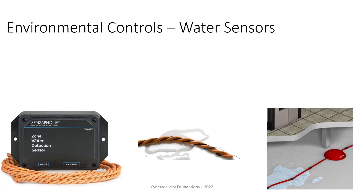Placing the data center on the highest floor also makes it subject to direct sunlight, requiring a stronger air conditioner to stabilize the temperature. When choosing a floor for your data center, the top floor is not recommended for all these reasons. The ground floor is also not recommended due to flood risk and physical attack vulnerability since there is less access control. The first or second floor would be appropriate.